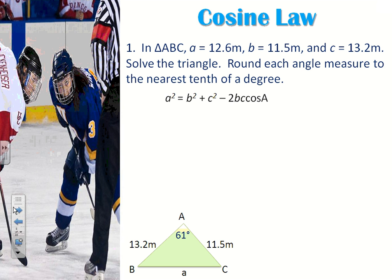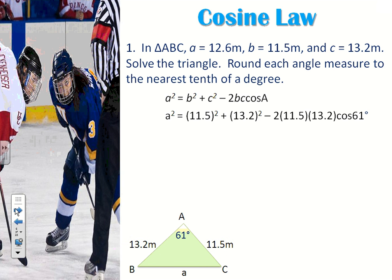Here's the cosine law. I started with a squared because I'm looking for little a. I'm going to start filling it in now. So here's little b — that's 11.5 — and we also have little c, which is 13.2. Both of those are squared, and then I go minus 2 times b times c. I did have that angle for capital A, and that was 61. Now that I have all my numbers, I'm just going to solve for little a.